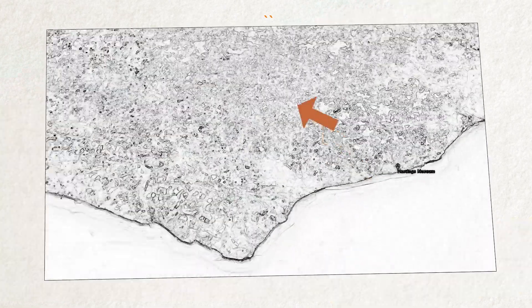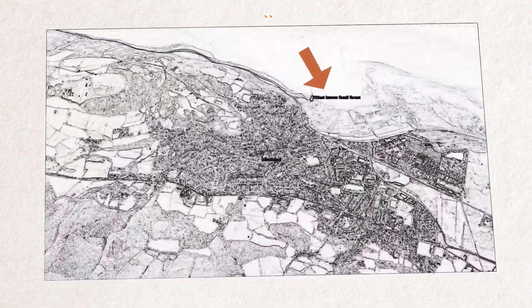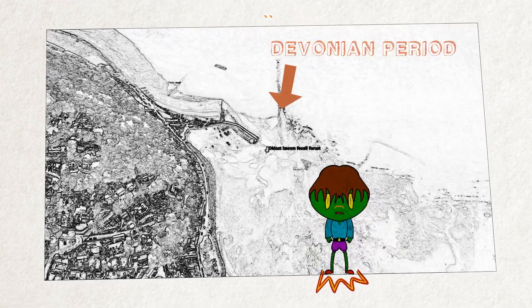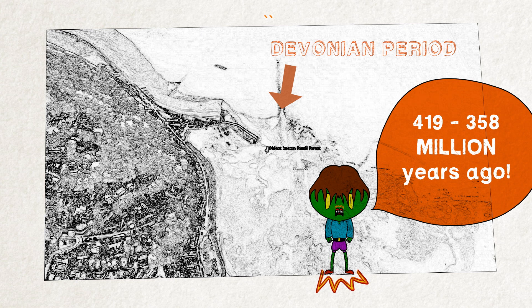Recently the oldest pine fossil forests were discovered in Minehead Somerset, close to Butlins Holiday Camp. It dates back to the Devonian period between 419 and 358 million years ago.